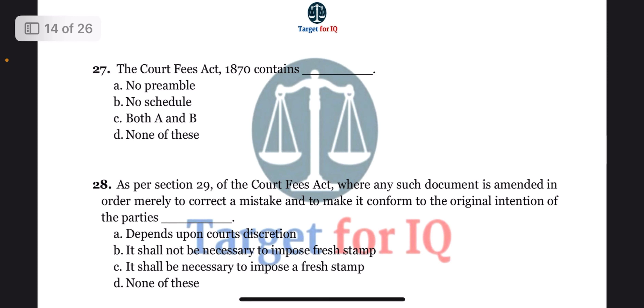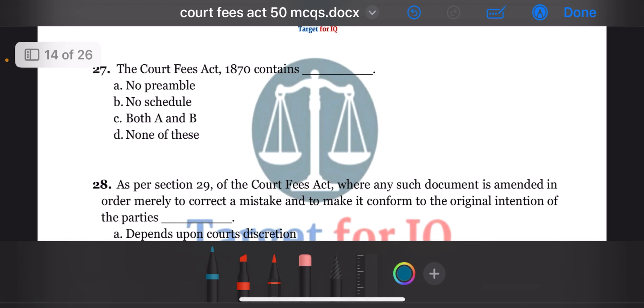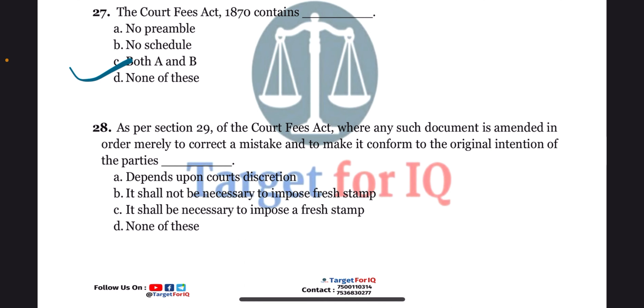Next question: the Court Fees Act 1870 contains dash. The options are A. No preamble, B. No schedule, C. Both A and B, or D. None of these. The correct answer is option C. Both A and B.